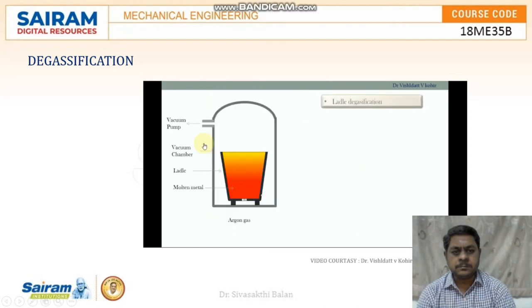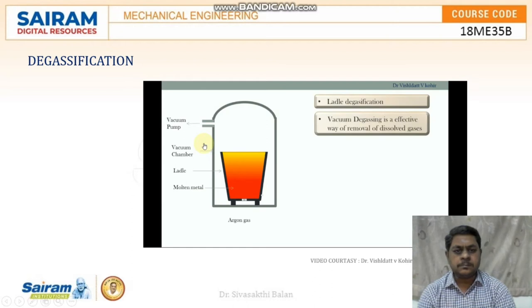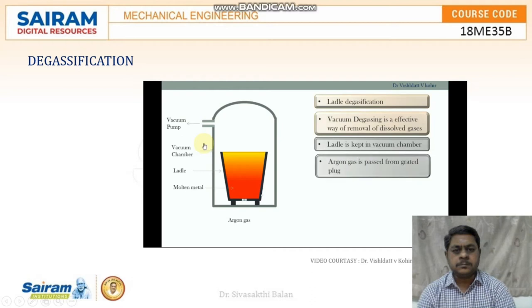Most of the time, the degasification will take place in the ladle itself. Vacuum degassing is an effective way of removal of dissolved gases from the molten metal. The ladle is kept in a vacuum chamber, and a vacuum pump is used to reduce the pressure in the chamber to the order of 1 torr to 5 torr. When the molten metal is exposed to the low pressure, gas formation becomes less and the gases get separated from the liquid metal.